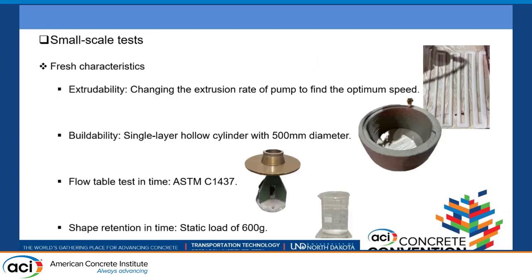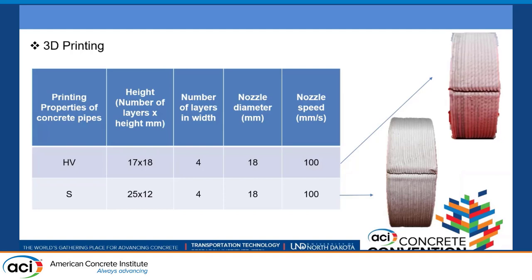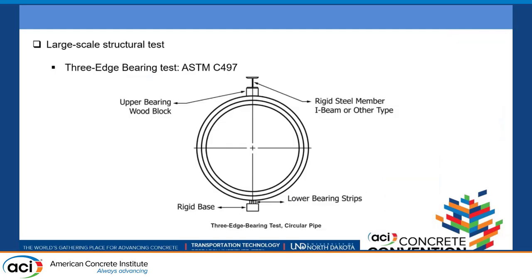For small-scale tests, we assessed fresh characteristics by testing extrudability—varying the extrusion rate of the pump to find the optimum speed. We conducted a buildability test by printing a single-layer hollow cylinder with 500 mm diameter, and a flow table test based on ASTM C1437. We also performed shape retention testing using a 600-gram static load. For mechanical tests, we performed compressive strength based on ASTM C109 on printed and saw-cut samples in three different directions. For 3D printing, we printed two large pipes using the same nozzle speed, nozzle diameter, number of layers, width, and height, and performed larger-scale structural testing based on ASTM C497 for concrete pipes.